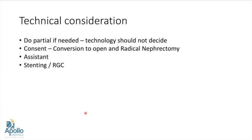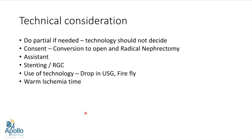Stenting or retrograde catheter placement is the surgeon's preference — I usually prefer stenting in all my complex cases. Use of technology like drop-in ultrasound or Firefly plays an important role in robotic surgery. Warm ischemia time definitely plays an important role, but remember: even if the warm ischemia time is increasing, if we can save nephrons by doing a partial we should always do it, while always trying to shorten the warm ischemia time.